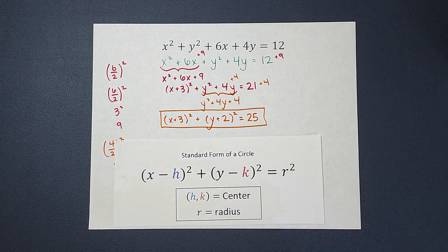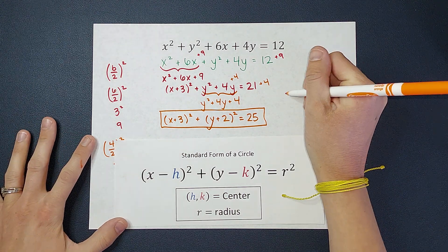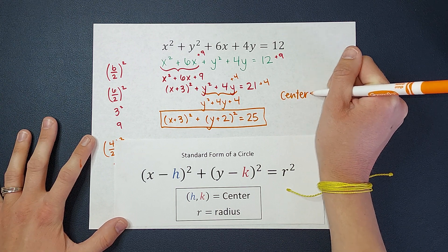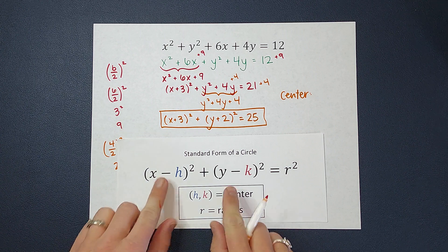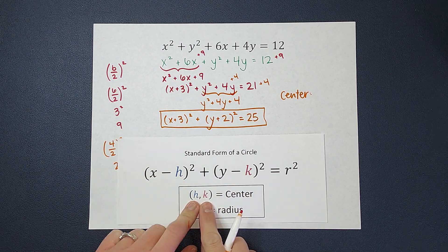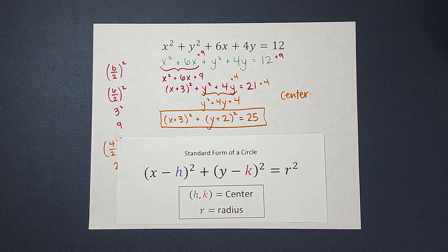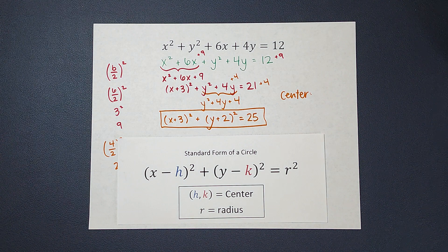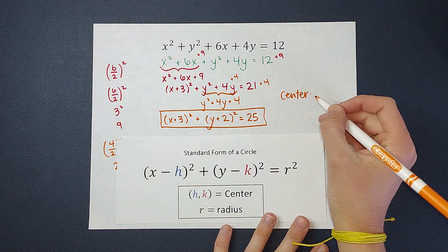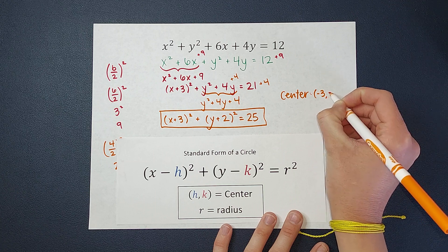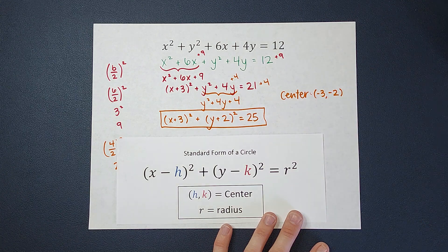So now it's really easy to see what my center and radius are. My center is the h and k. And remember, here they're negative, and then when I write them as the center, they're positive. So that just means we're switching the signs. So in this example, they're both positive. So when I write them as the center, I'm going to make them negative. So my center is negative 3, negative 2.